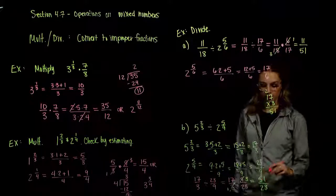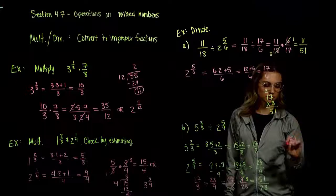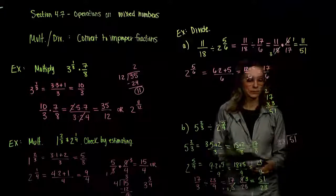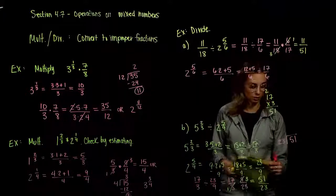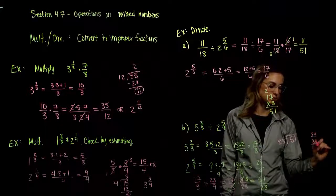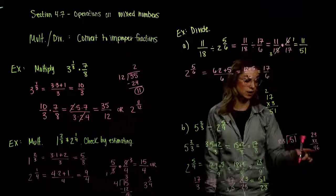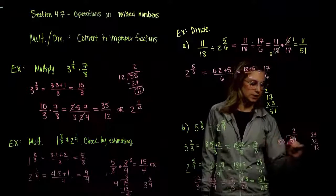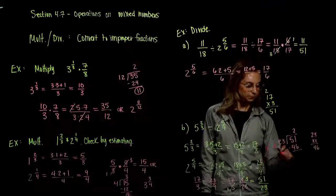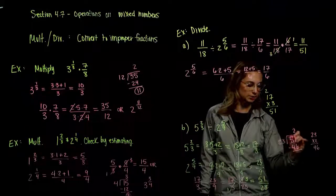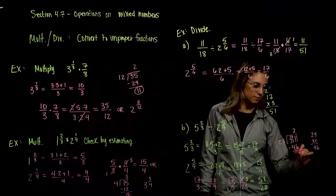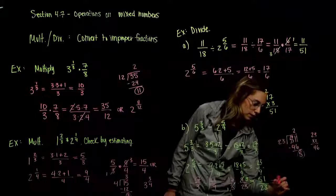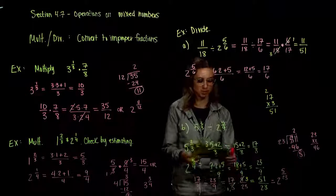As a mixed number, how do we represent fifty-one twenty-thirds? How many times can twenty-three go into fifty-one without going over? Twenty-three times two is forty-six, which fits; add another twenty-three and we're way over. So the max is twice, and fifty-one minus forty-six leaves five. So another way to state our answer is two and five twenty-thirds in mixed form.